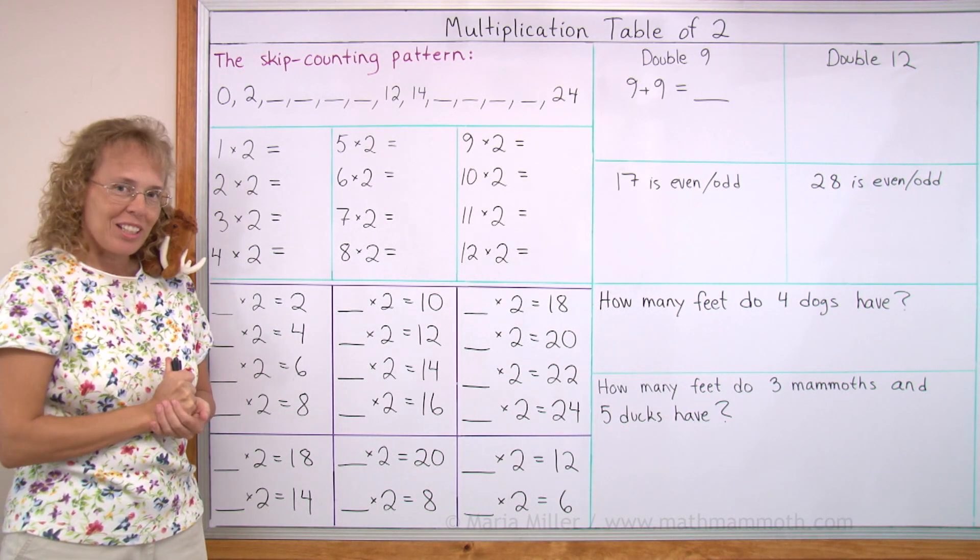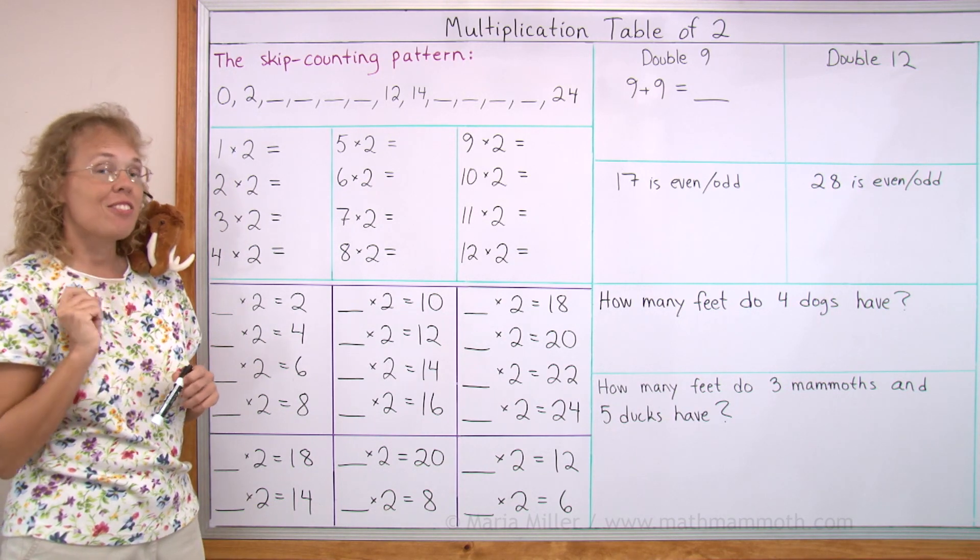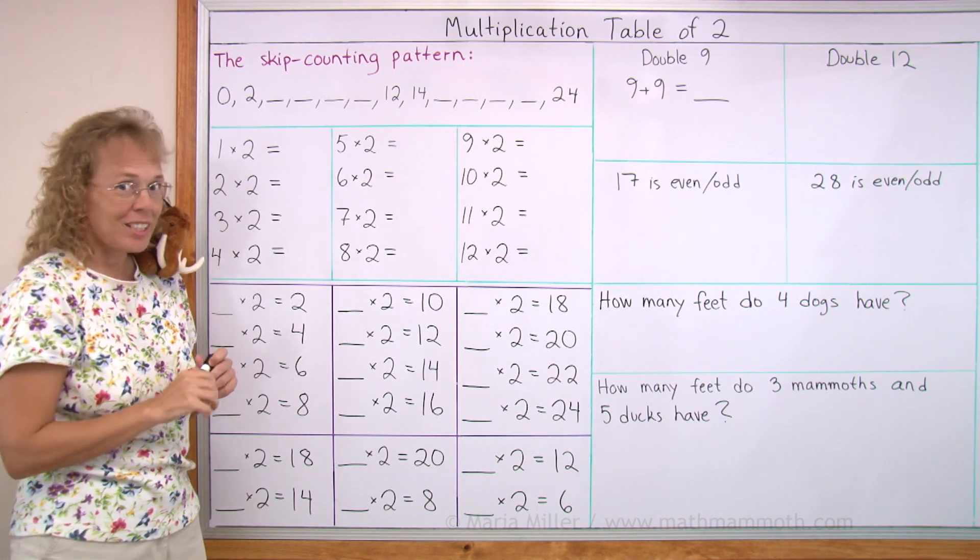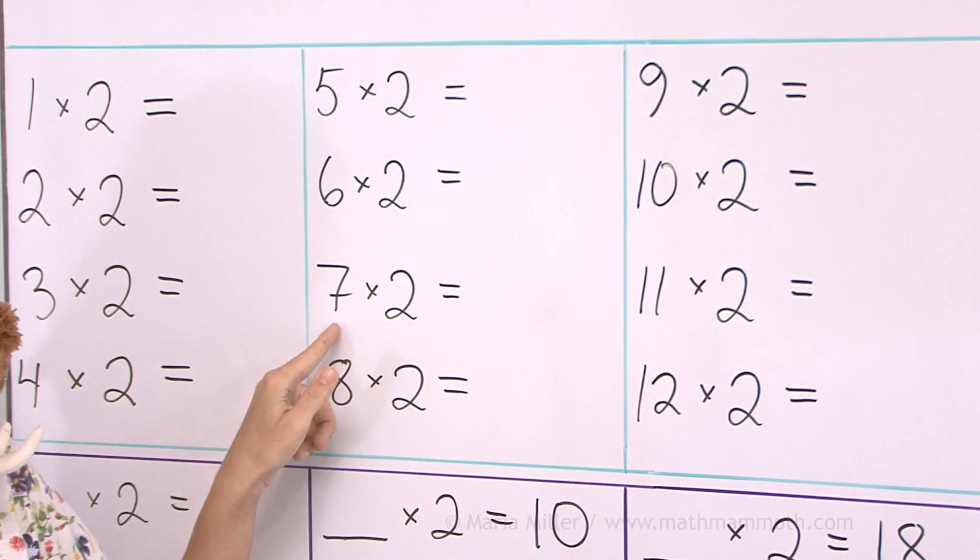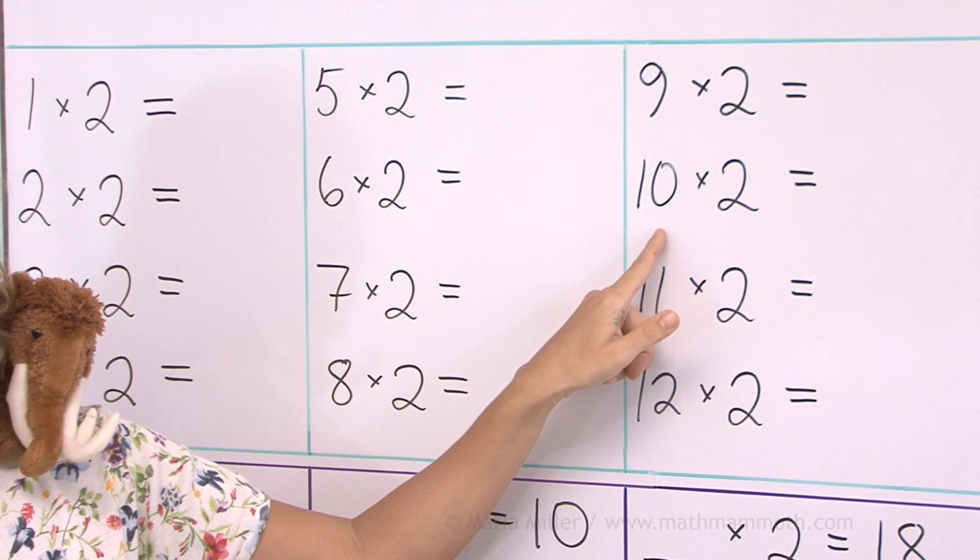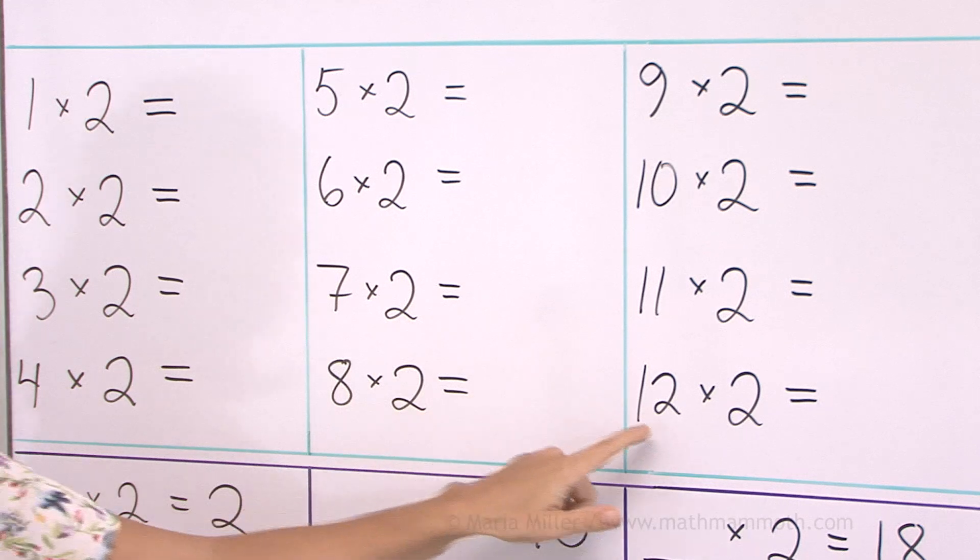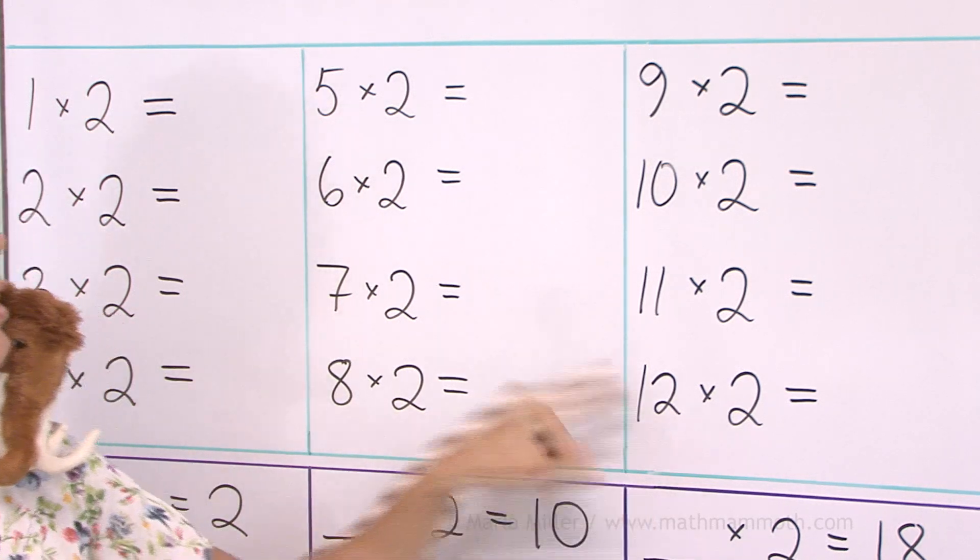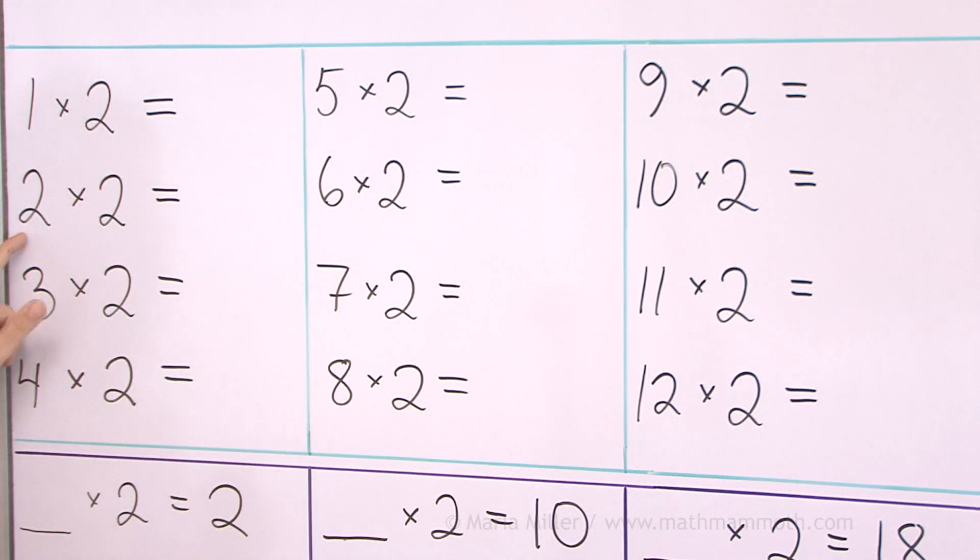Now it's time to do some drill. I'm going to point to problems and you try to say the answer as fast as you can. Ready? 3 times 2. 6. 7 times 2. 14. 10 times 2. 20. 6 times 2. 12. 12 times 2. 24. 5 times 2. 10. 2 times 2. 4. 8 times 2. 16.